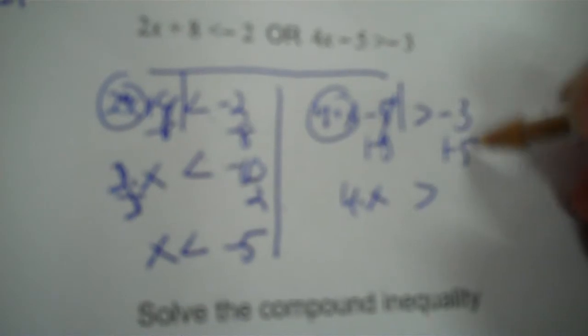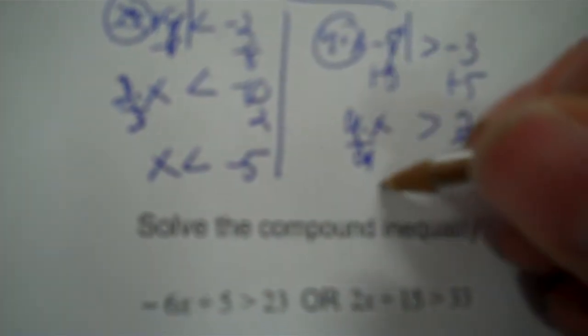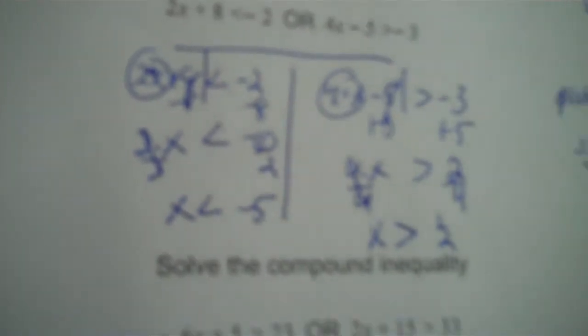So plus 5, plus 5. 4 times x, negative 3 plus 5 is 2. So divide by 4, divide by 4. 2 divided by 4 is 0.5, or one-half, positive half. So you have negative 5 and positive 1 half.